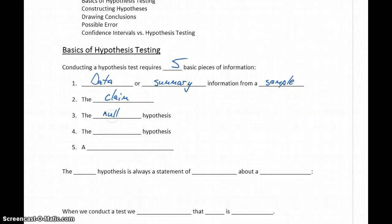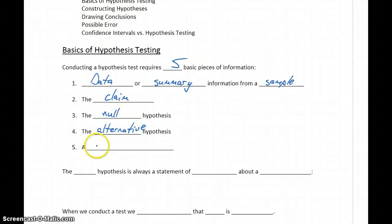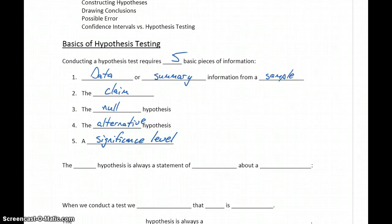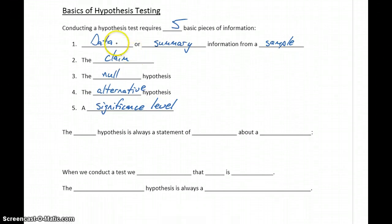We need a null hypothesis and we need an alternative hypothesis, so every test is going to have two hypotheses. And we need a significance level. Some of these things are fairly straightforward — we need data from our sample, we need a claim. But let's talk a little bit about what we mean by these hypotheses and our significance level.